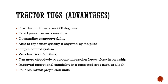The second type is tractor tugs. Tractor tugs have certain advantages, including providing full thrust over 360 degrees of operation. They have a rapid power-on response time and outstanding maneuverability capabilities. In contrast to conventional tugs, tractor tugs are able to reposition quickly if required by the pilot. Their control systems are very simple and they pose a very low risk of capsizing.